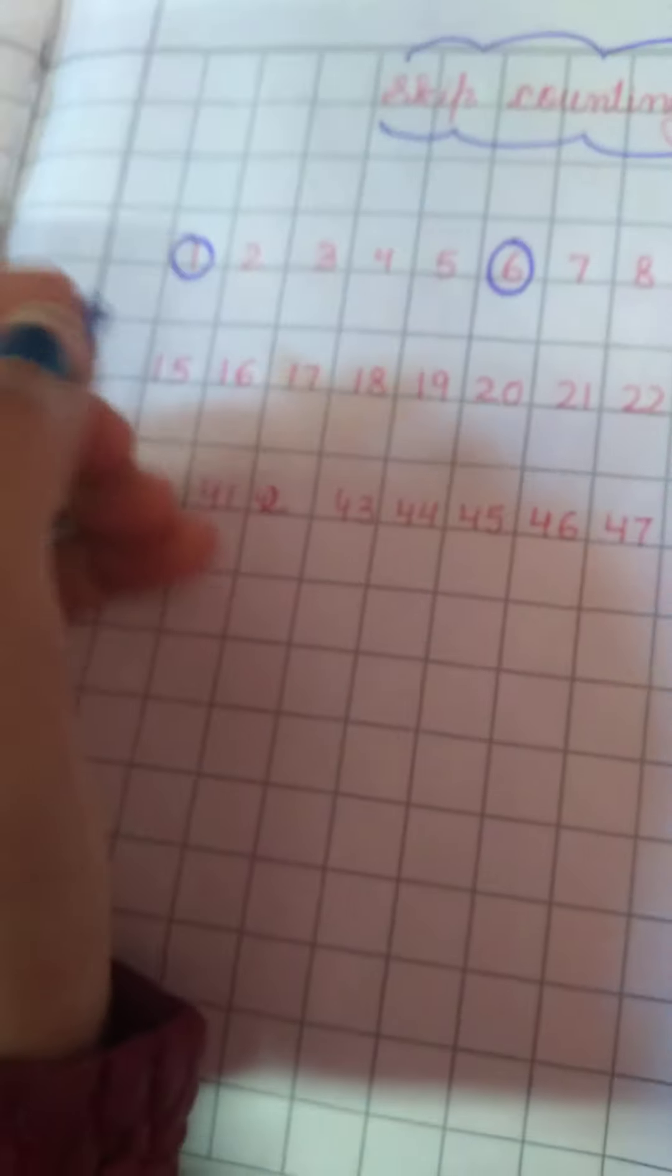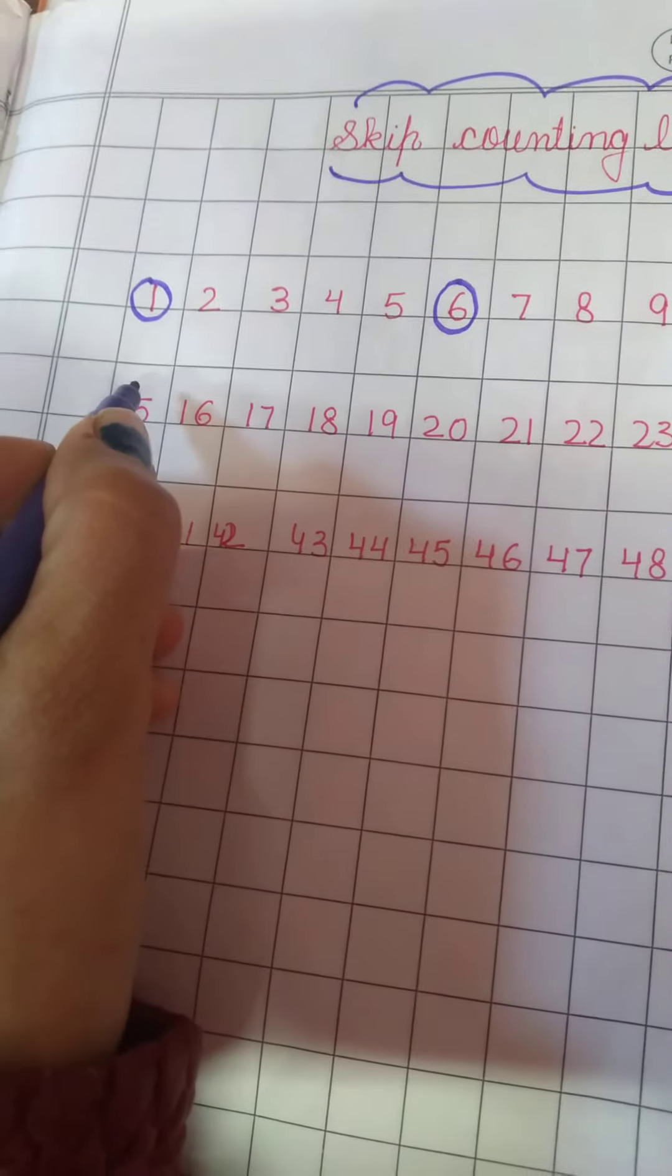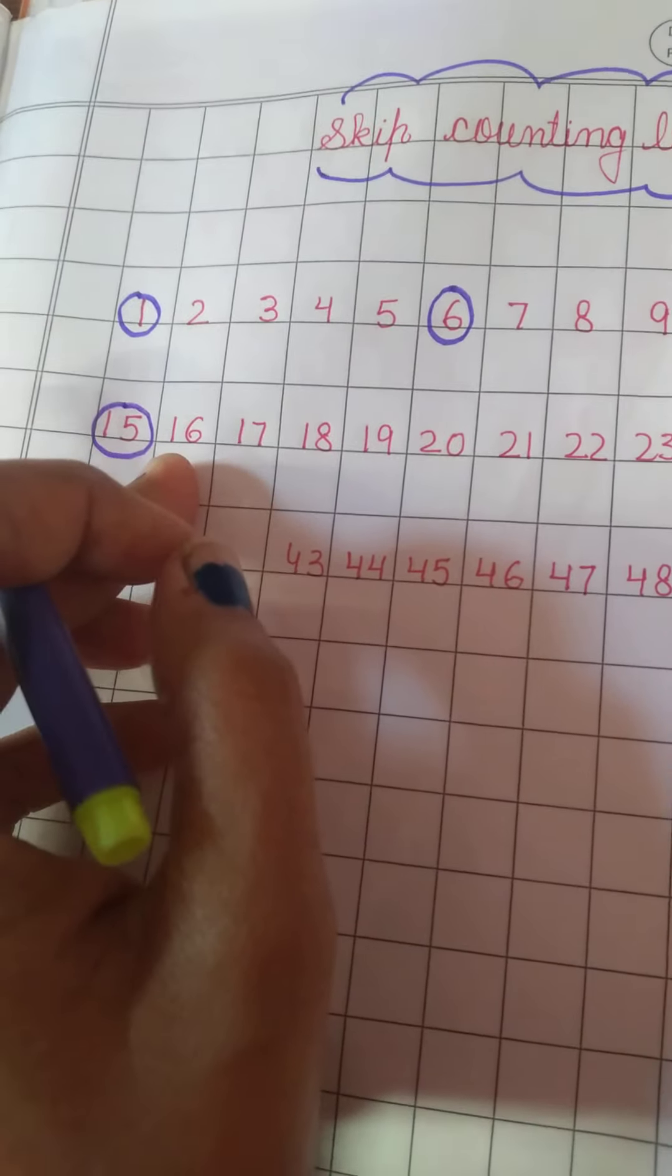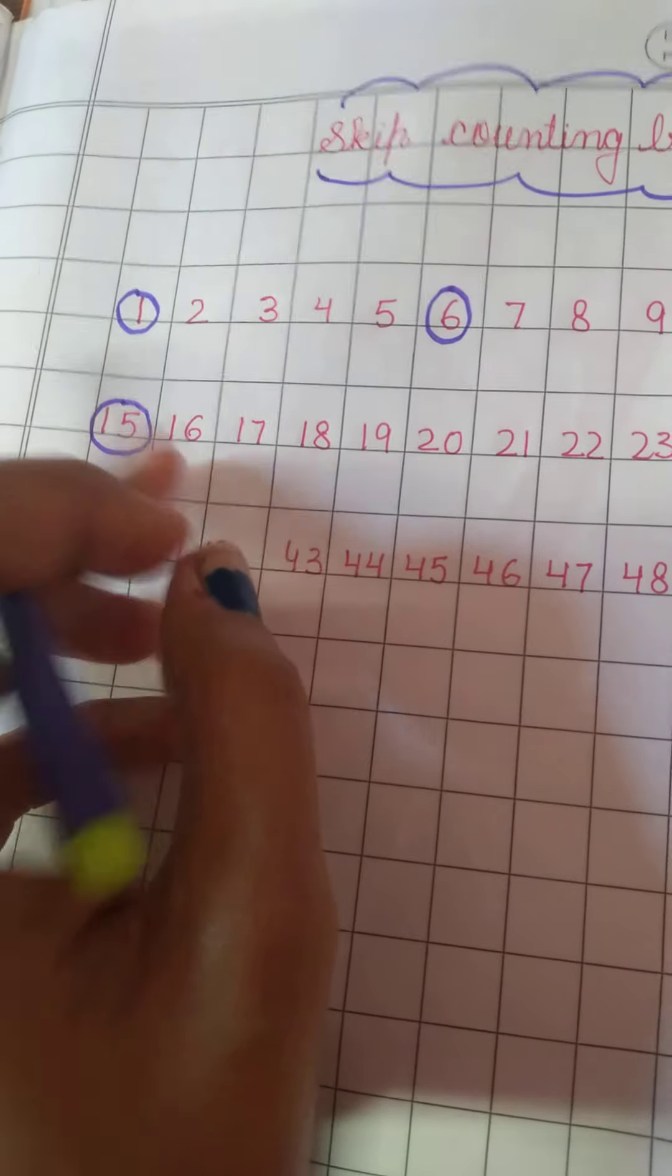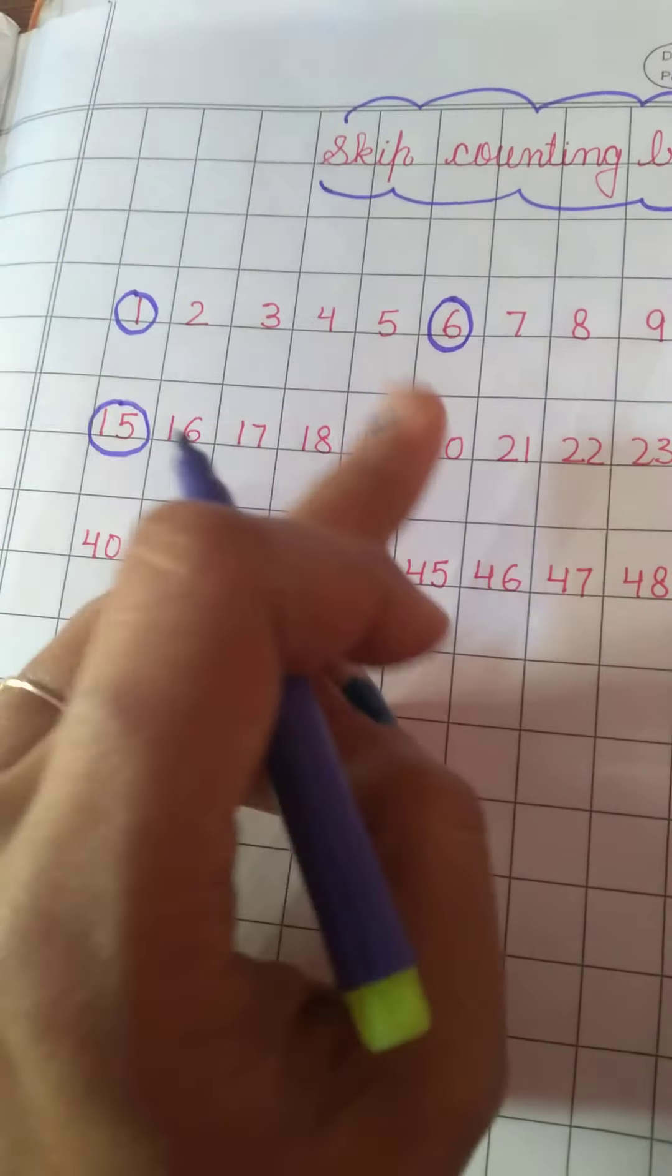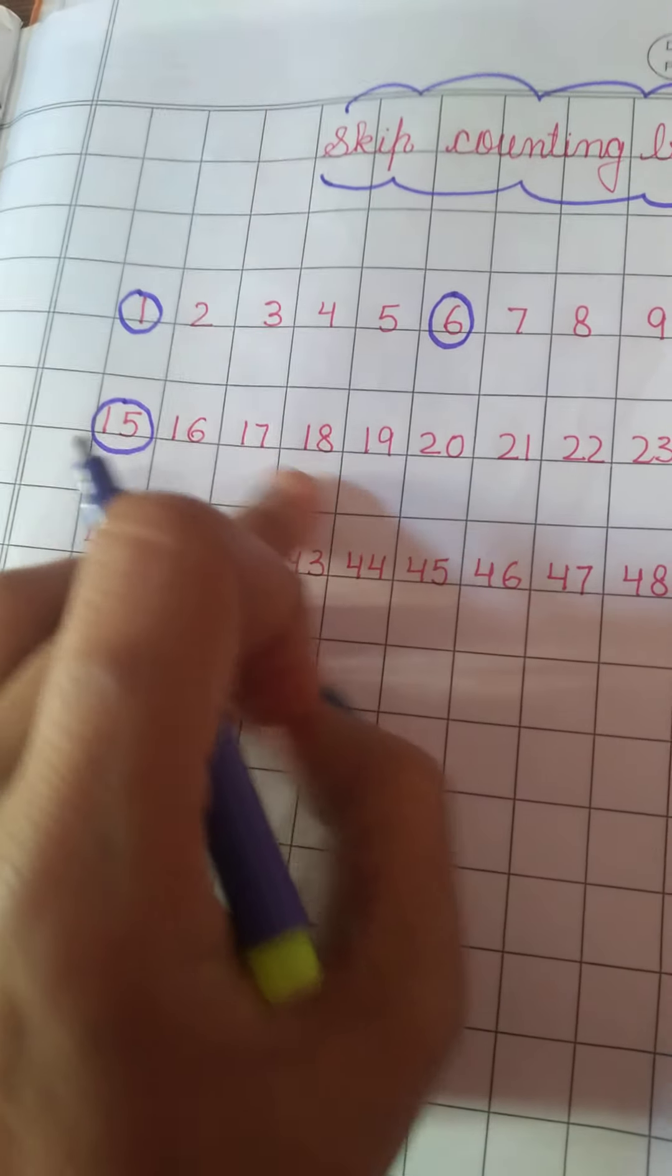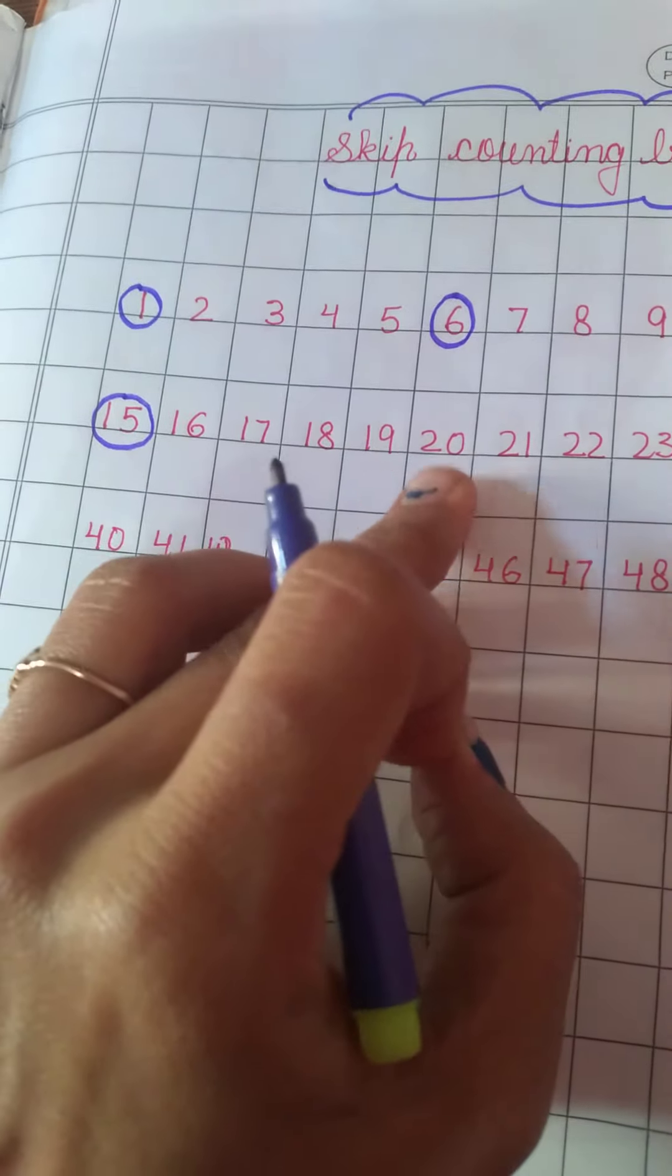If I am giving you number 15. This is number 15. Now you have to jump on next fifth number. Next fifth number pe. Aapko jump karna hai. To start counting: 16, 17, 18, 19, 20.